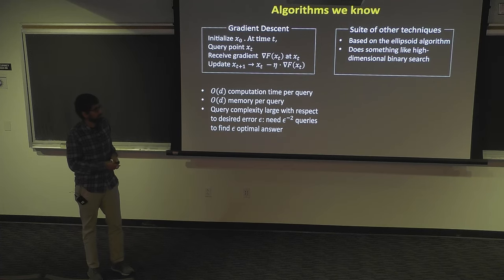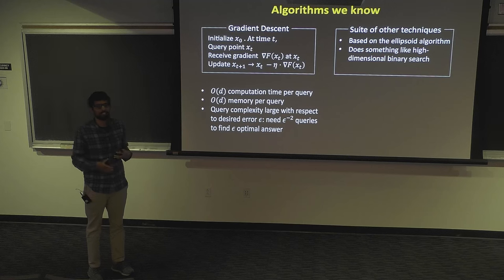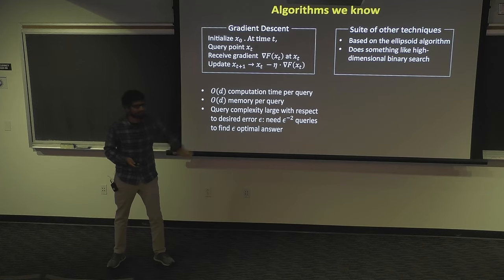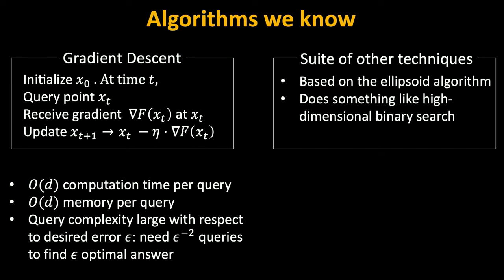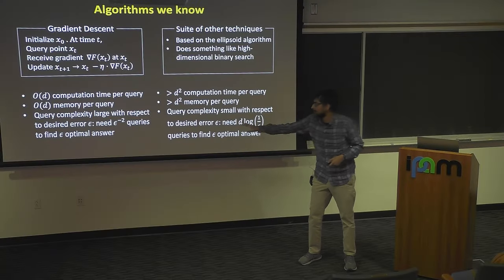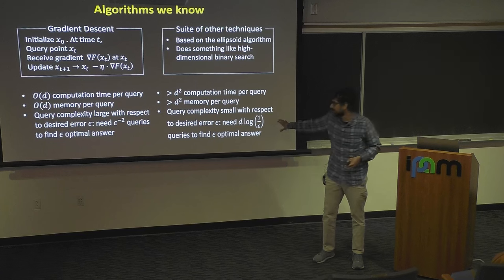There's a suite of other techniques developed for this problem, most of them based on the ellipsoid algorithm or variants of the cutting plane method. Intuitively they all do something like a high-dimensional binary search. They can be much more expensive — all of them require d-squared computation time per query, and they need d-squared memory at every time step. But with this increased computational cost, they get a smaller query complexity: to find an epsilon-suboptimal point, they need only d log(1/ε) queries, which can be much better for small error epsilon.